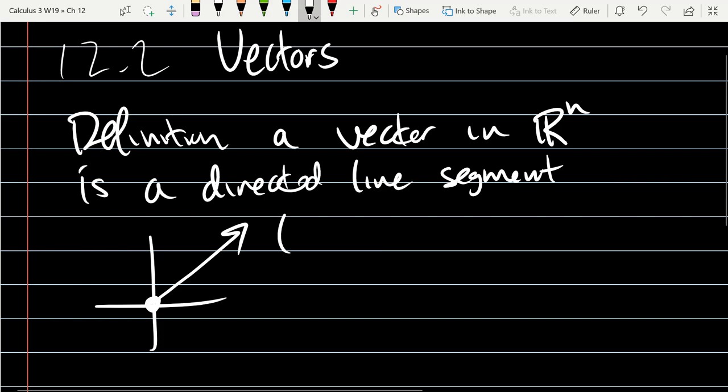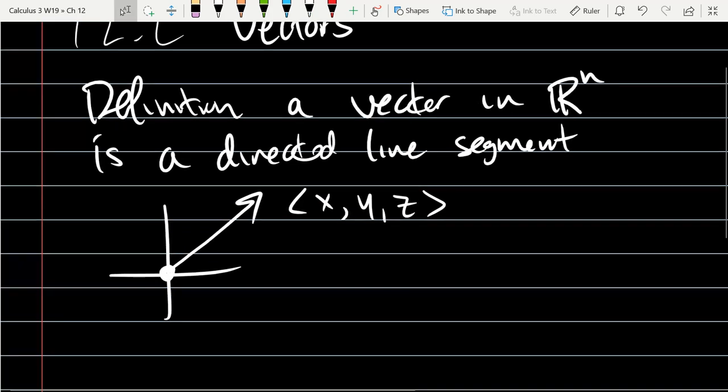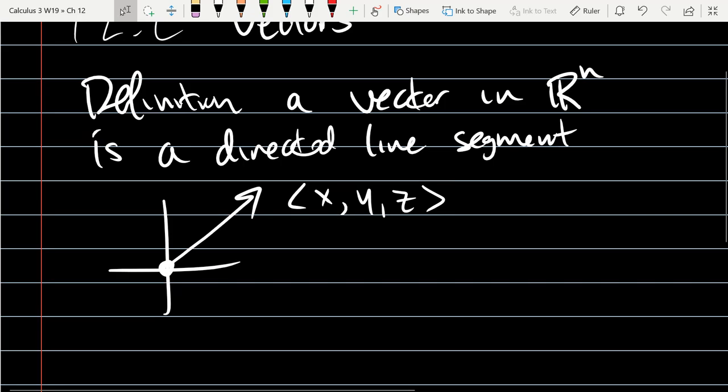Usually we'll either be in two or three dimensions for this class. When we draw a vector, we're going to use diamond notation most of the time. So it'll have an x-coordinate, a y-coordinate, and a z-coordinate if we're in three dimensions. So instead of graphing the point right there in green, now we're going from the origin to the point with an arrow.